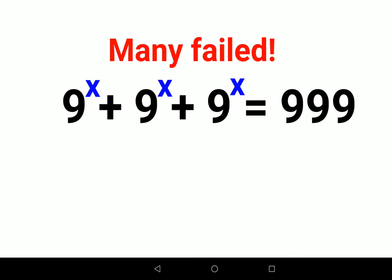Welcome everyone. Today we're going to solve a nice indices problem. The question is: 9^x + 9^x + 9^x = 999. Many people thought this was difficult because there's an index with a plus sign—it's neither a proper square root nor cube root.